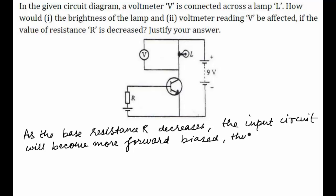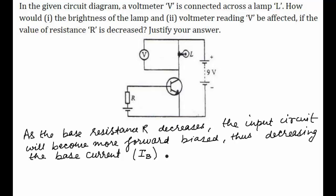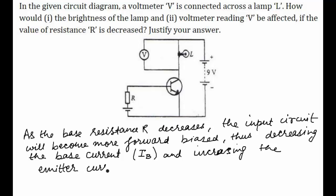Decreasing the base current, denoted by capital I_B, will increase the collector current, denoted by capital I_C.